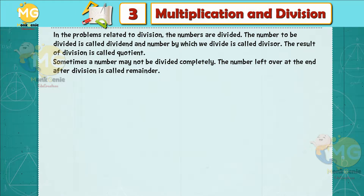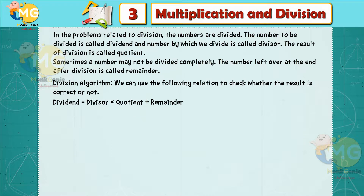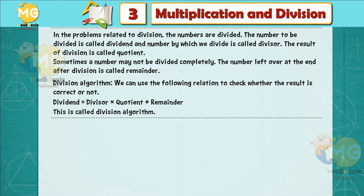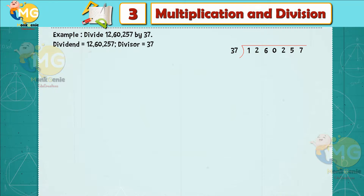The number left over at the end after division is called the remainder. Division algorithm: we can use the following relation to check whether the result is correct or not — Dividend = Divisor × Quotient + Remainder. This is called the division algorithm.